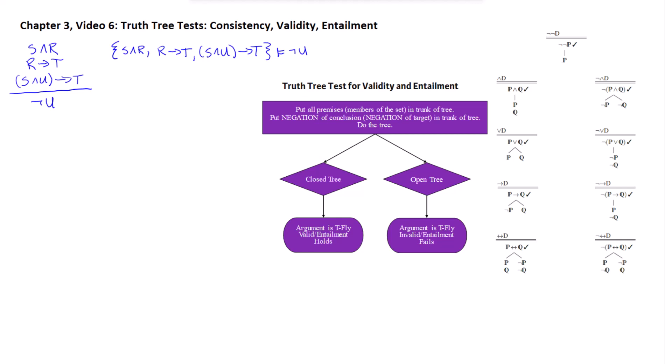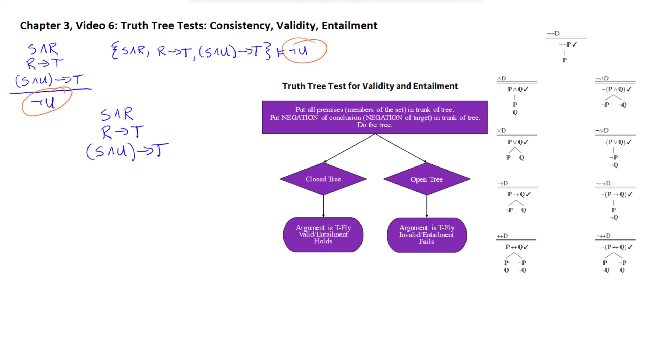Let's see two quick examples. We've got an argument on the left and its corresponding entailment claim right next to it. To set up the tree for testing either validity or entailment — since it's exactly the same test — all we do is put the premises or members of the set into the trunk of the tree. Then we remember to take the negation of the conclusion or target. Technically we would put in hook-hook-U and then decompose that to U, but since we allow ourselves to hide the double negation step: the conclusion here is hook-U and we need the negation of it in the trunk, so we can just remove the hook.